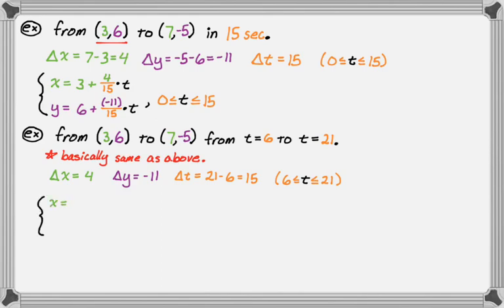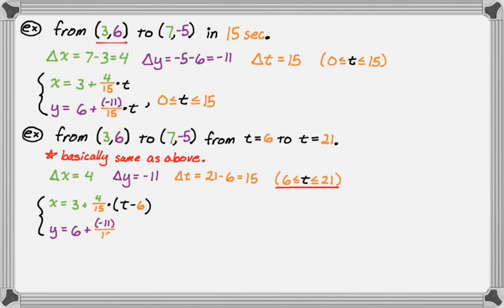For x, our initial x value is 3, plus delta x over delta t — so 4/15 — times the quantity (t minus 6). That's really important now, because when t equals 6, (t minus 6) is zero and we get x equals 3, which is correct. For y, the initial y is 6, plus -11/15 times the quantity (t minus 6). When I substitute 6 for t, that zeroes out and I get 6, which is my initial y-coordinate. And we stipulate that t is between 6 and 21. Those are two different examples of writing parametric equations for line segments — I hope you found this helpful!